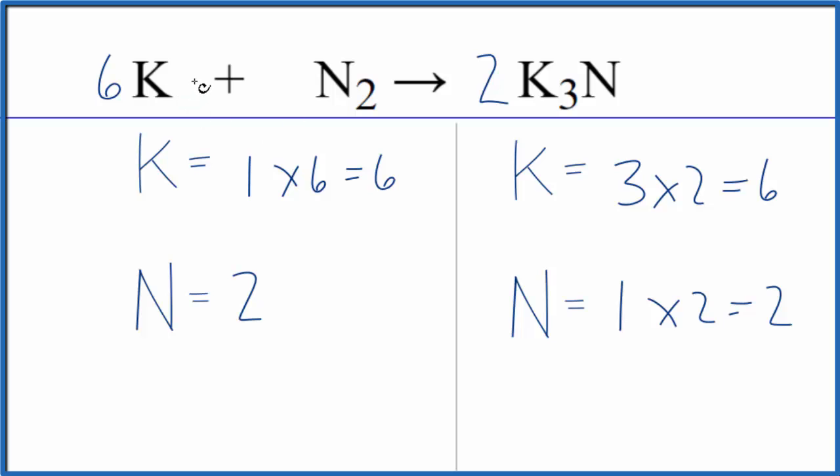In this equation, the potassium, that would be a metal. It would be a solid. The nitrogen, N2 is a gas. And the product, the K3N potassium nitride, that would be a solid.